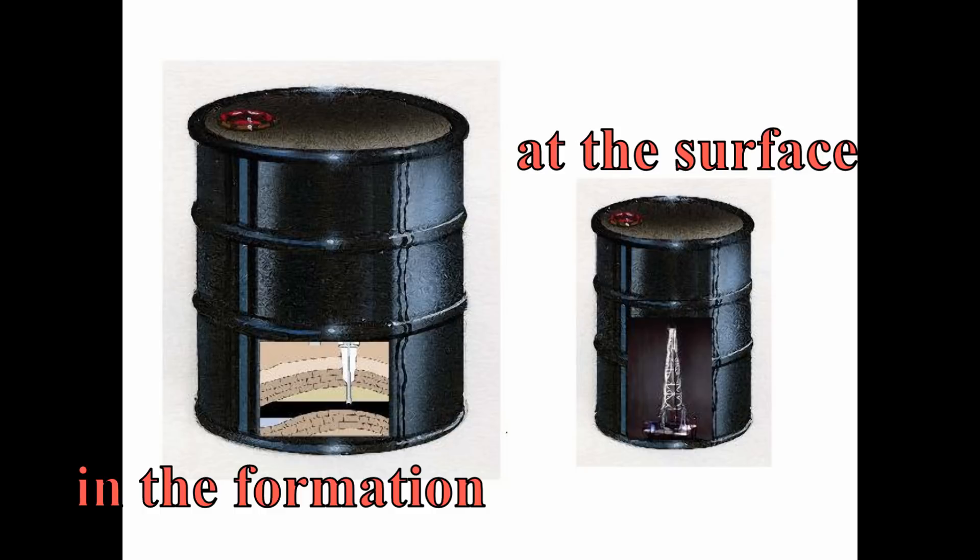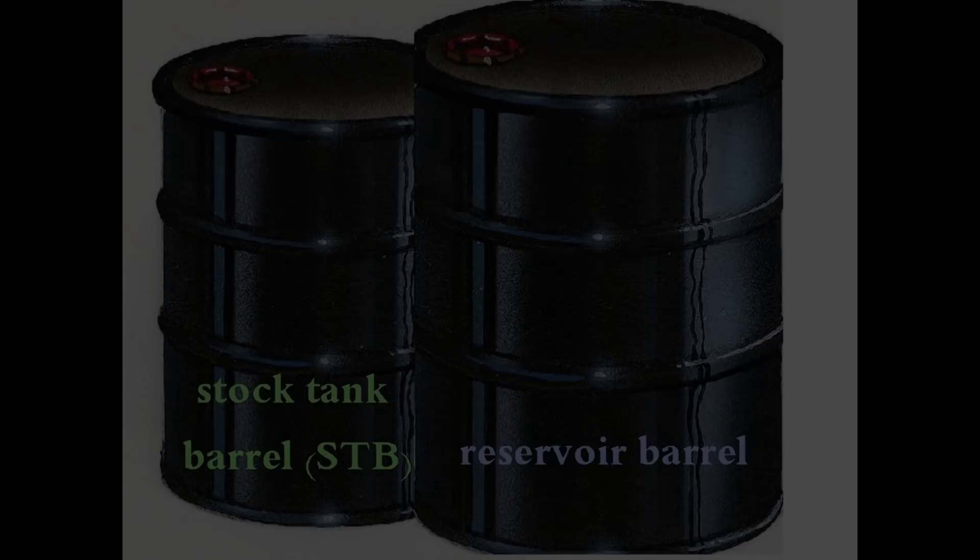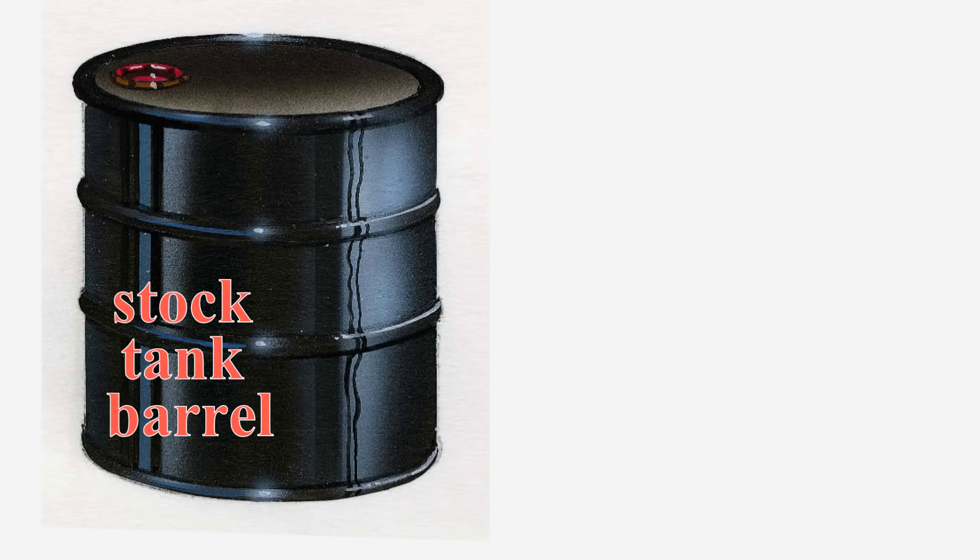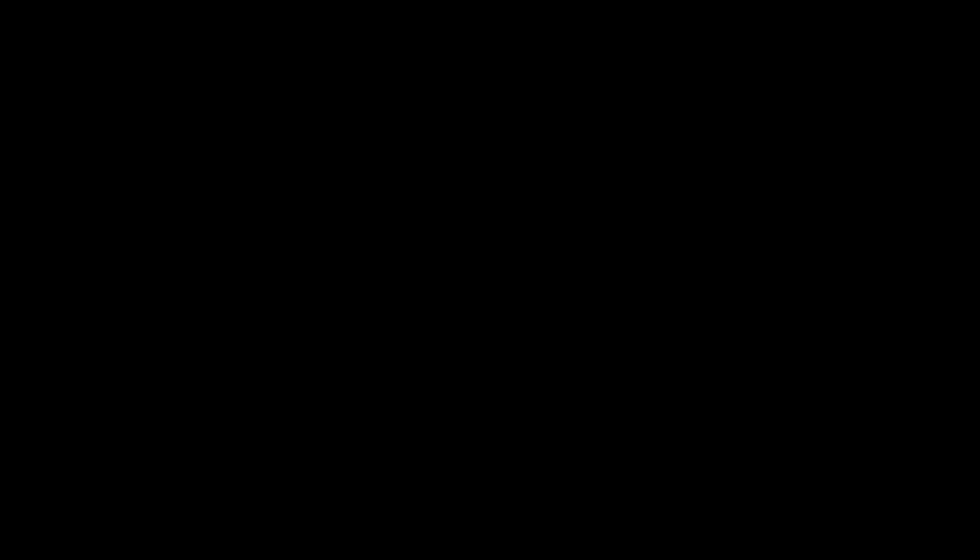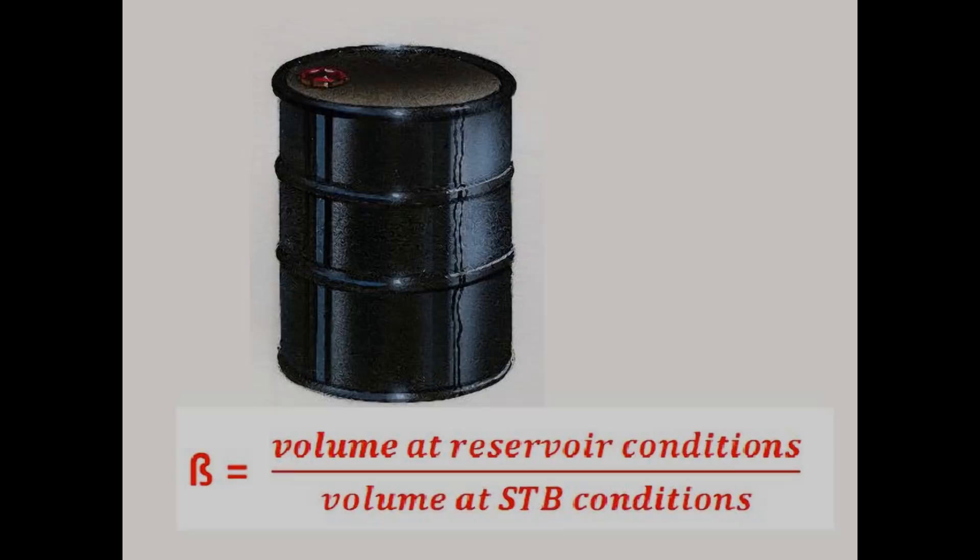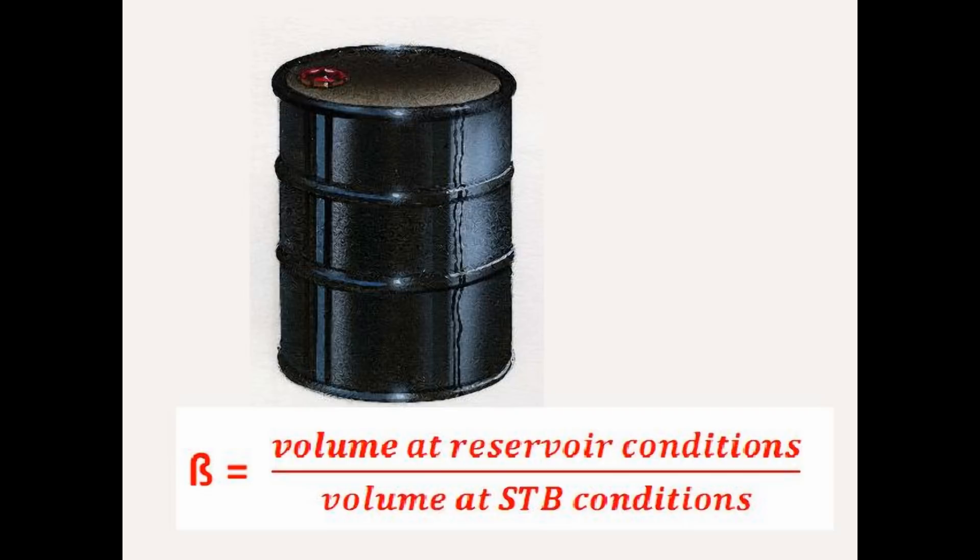It is the fraction of the space occupied by a reservoir barrel of oil to the space occupied by a stock tank barrel, STB, of oil at standard surface temperature and pressure. STB is defined as standard surface pressure at 14.7 psi and standard surface temperature of 60 degrees Fahrenheit. The formula for the formation volume factor is beta equals the volume of oil at reservoir conditions divided by the volume of oil at stock tank barrel conditions. Beta in the reservoir is usually greater than 1.